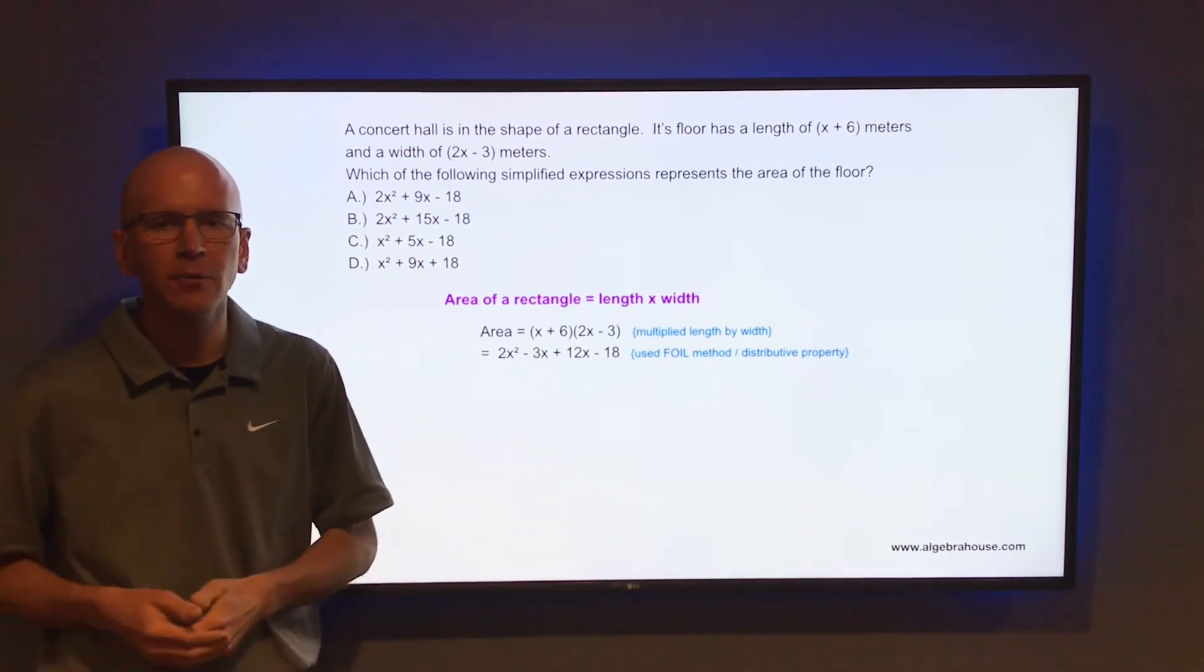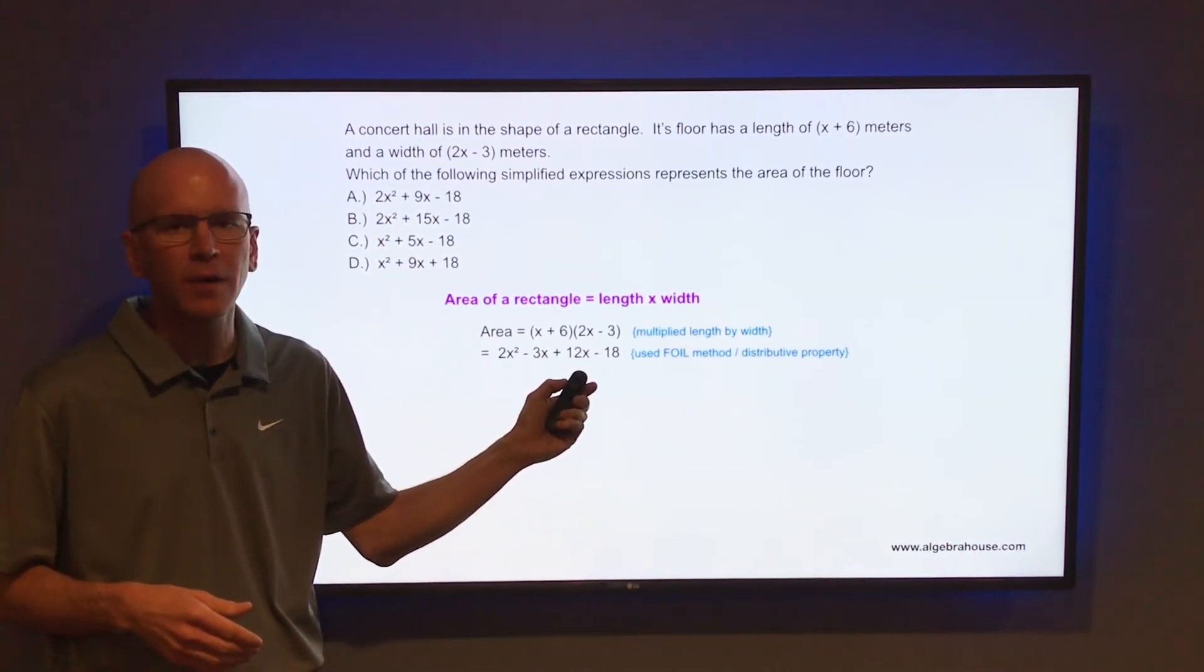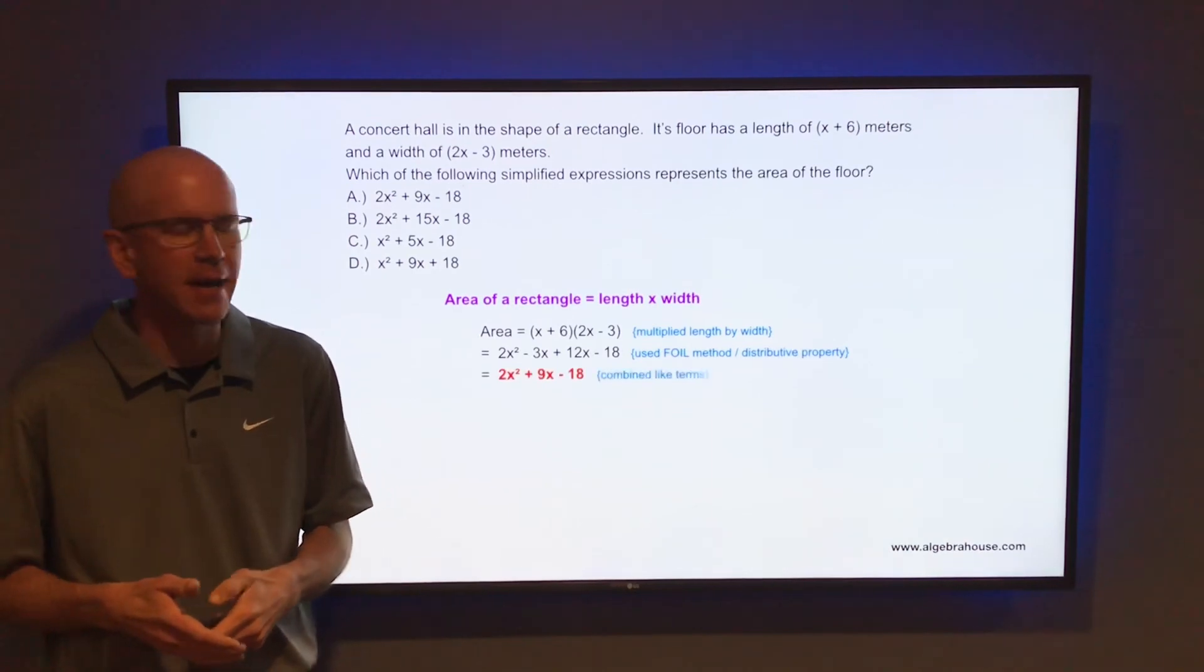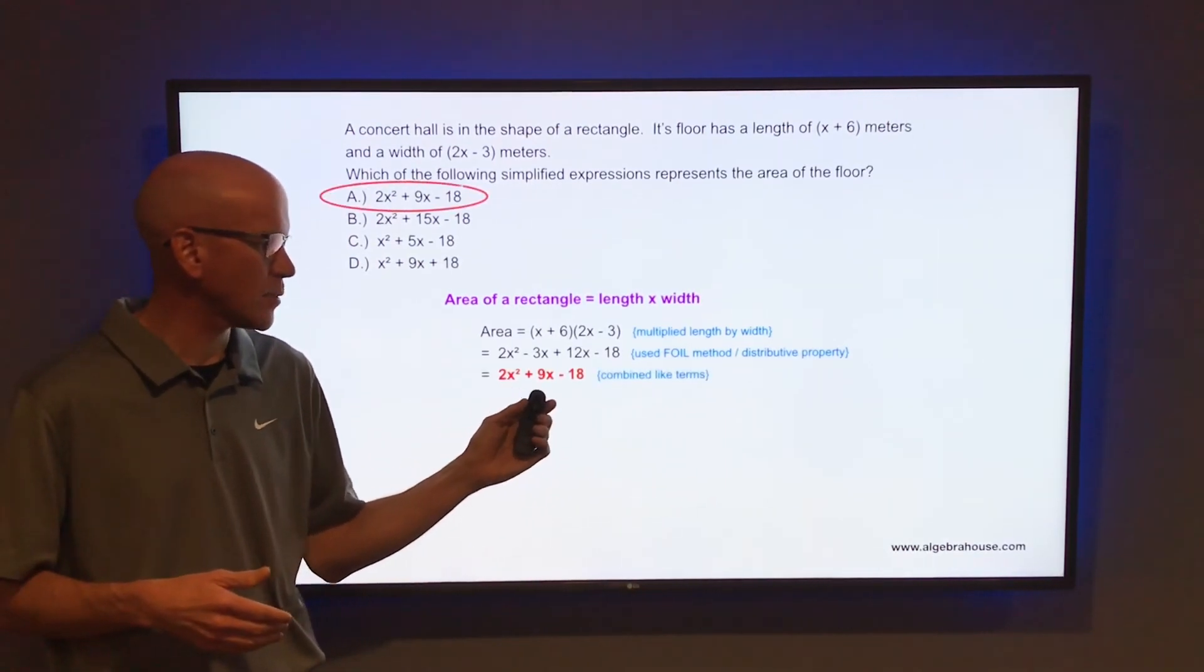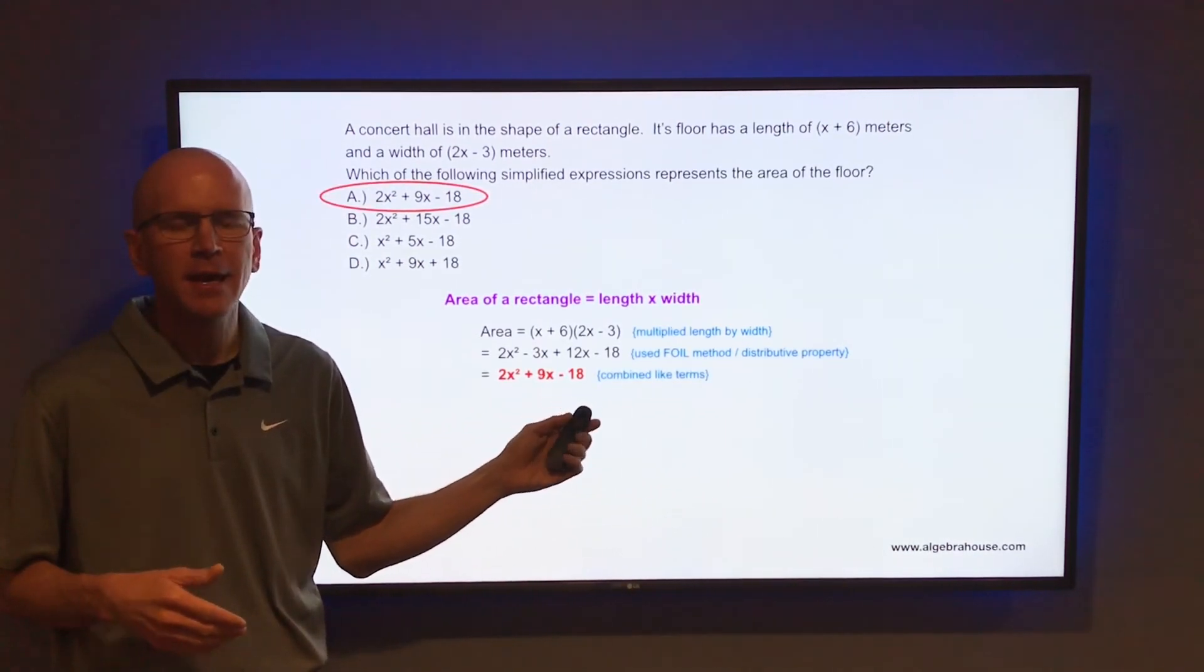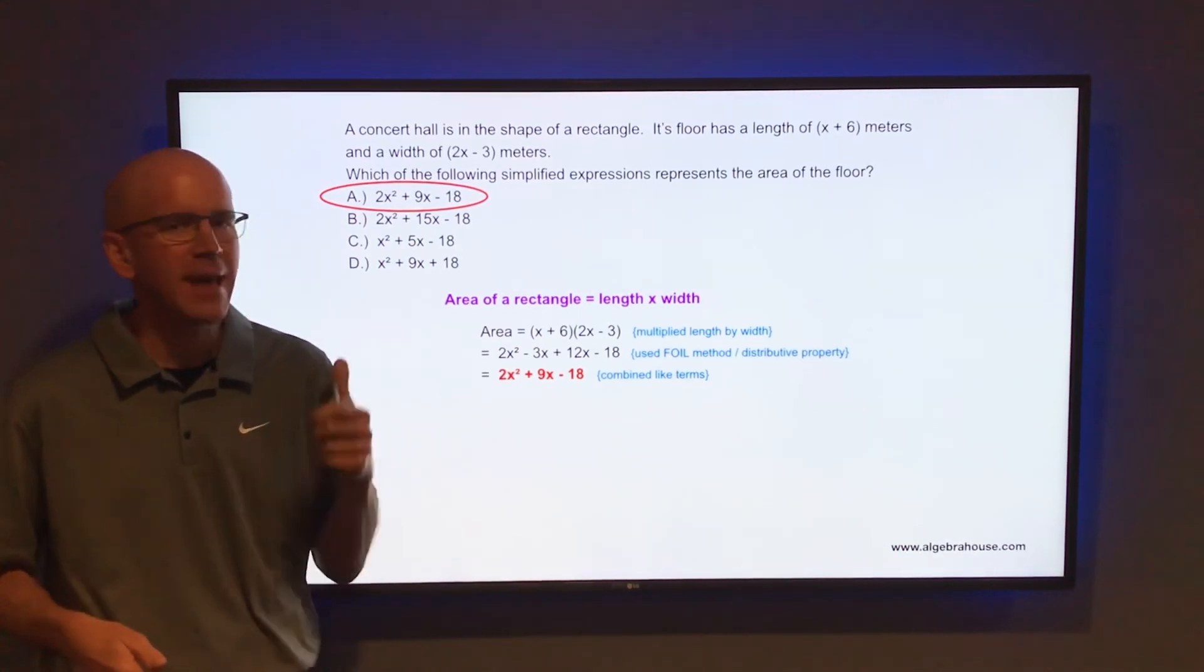Go back through and combine the like terms. Like terms would be negative 3x and 12x. If you combine those, that is 9x. So you get 2x squared plus 9x minus 18. That is the area of the floor, and that is letter A.